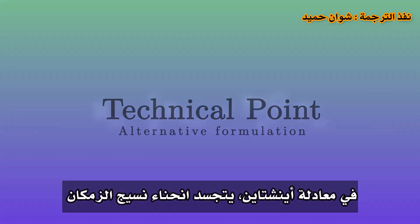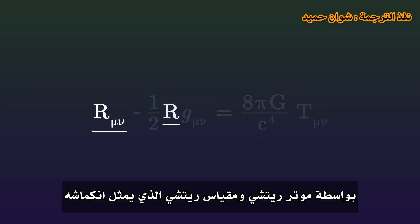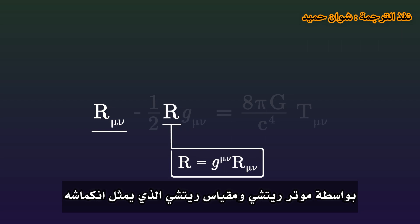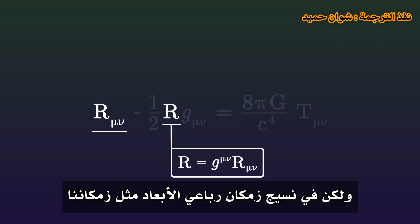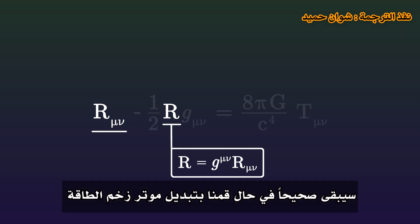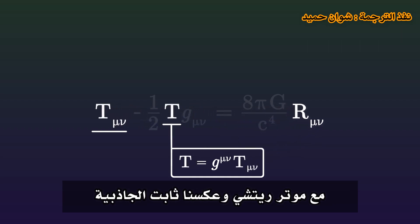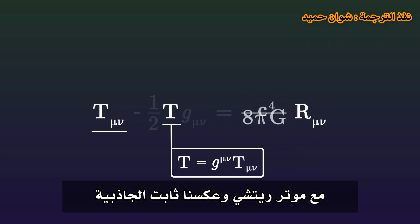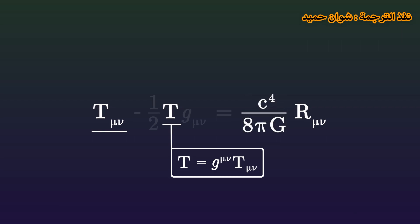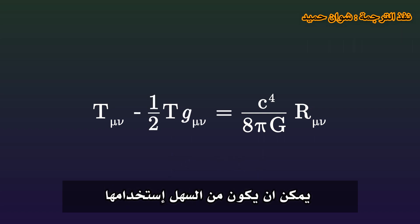In the Einstein equation, the curvature of space-time is embodied by the Ricci tensor and the Ricci scalar, which is its contraction. But in a four-dimensional space-time like ours, the equation has a very interesting symmetry: it remains valid if we swap the energy-momentum tensor with the Ricci tensor and invert the gravitational constant. This new equation is completely equivalent and, in some cases, can be easier to use.